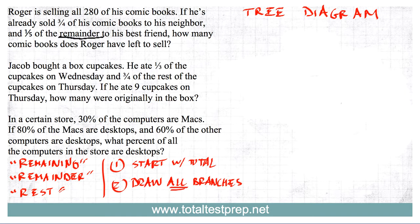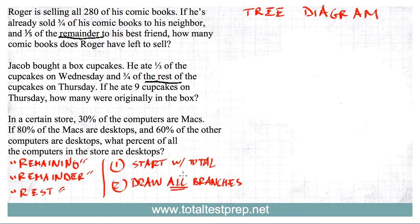The next question says: Jacob bought a box of cupcakes. He ate one third of the cupcakes on Wednesday and three quarters of the rest on Thursday. If he ate nine cupcakes on Thursday, how many were originally in the box? Again, this is a word problem dealing with fractions and we have the keyword 'the rest,' meaning we're breaking things down into something and its opposite — which is why the tree diagram is helpful. Let's make the tree diagram, starting with the total.